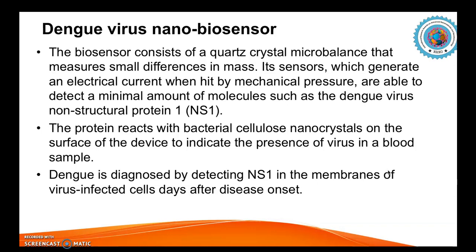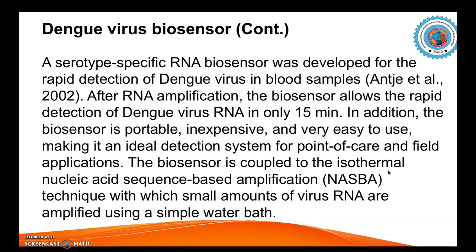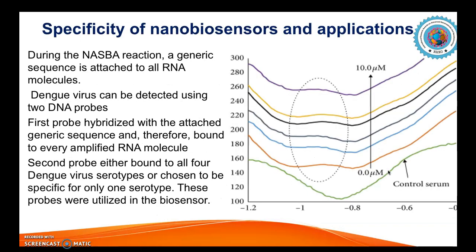Another type, a serotype-specific RNA biosensor, was developed for rapid detection of dengue virus in 2002 and remains a hallmark method. After RNA amplification, the biosensor allows rapid detection of dengue virus RNA in only 15 minutes. The system is portable, inexpensive, and very easy to use, making it ideal for point-of-care and field applications. The biosensor is coupled to the isothermal nucleic acid sequence-based amplification (NASBA) technique, with which small amounts of virus RNA are amplified using a simple water bath, making it suitable for rural and inaccessible areas.